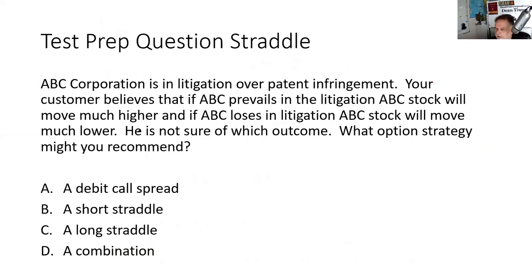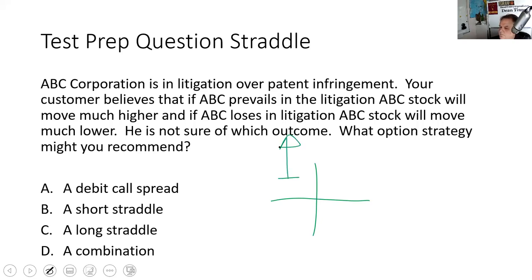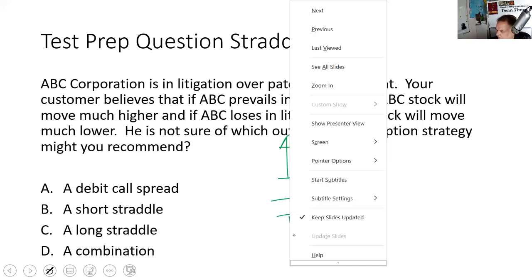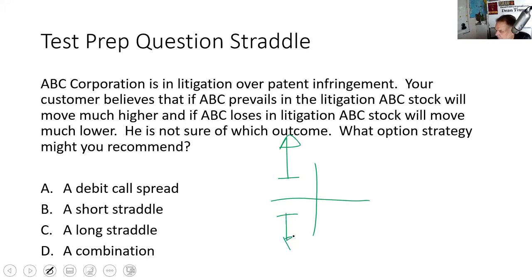Here's a test prep question: ABC Corporation is in litigation over a patent infringement. Your customer believes that if ABC prevails, the stock will rise much higher, and if ABC loses, the stock will go much lower. The customer doesn't know which way. What option strategy would you recommend? A long straddle. The four test issues are: can you identify a straddle, can you calculate break-evens, can you determine where it's profitable, and when do you use it?